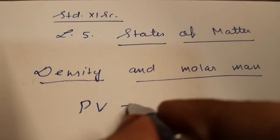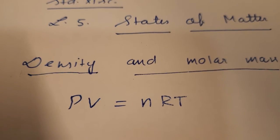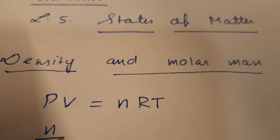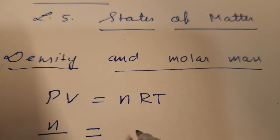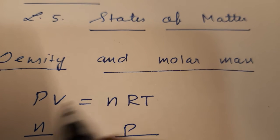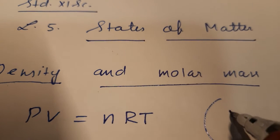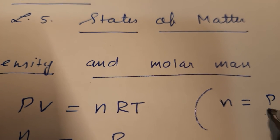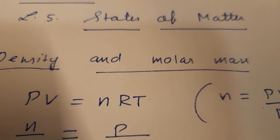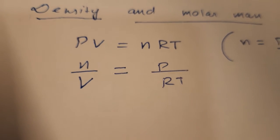We know that PV = nRT, the ideal gas equation. Rearranging, n upon V is equal to P upon RT.